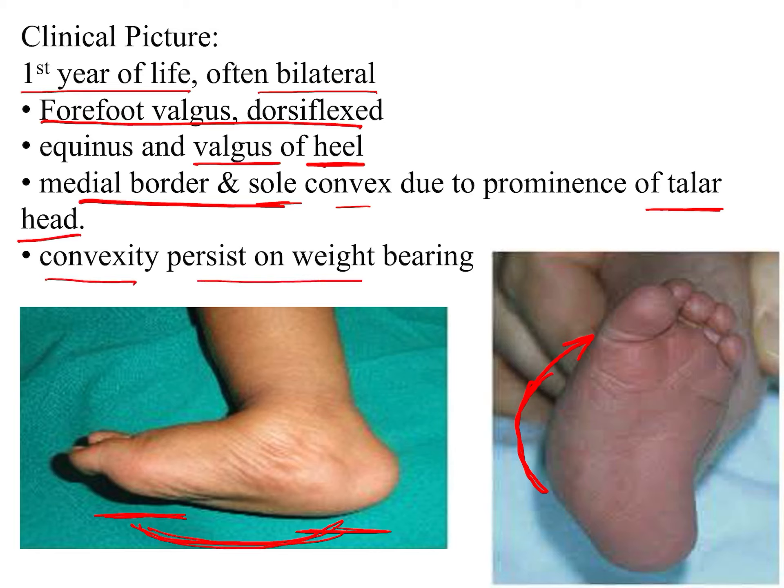Since it is a bony deformity, we need to get an X-ray done to look at the bones. There are four important views: AP view, lateral view, maximum dorsiflexion, and maximum plantar flexion. X-rays are supine for infants, but for older weight-bearing children they should be done in a weight-bearing position.